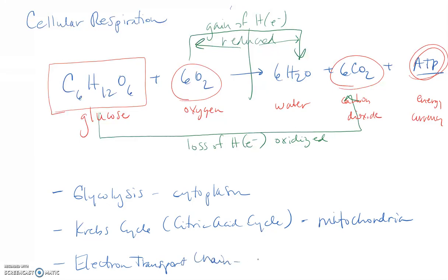The third process is the electron transport chain, where a process called oxidative phosphorylation is carried out. This is also in the mitochondria. You'll need to watch each successive video about glycolysis, Krebs cycle, and electron transport chain to get the details of cellular respiration.